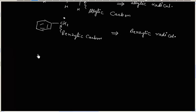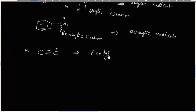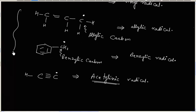We can also have a radical on a carbon coming from acetylene, which we can call acetylenic carbon, and this radical is an acetylenic radical — though this naming may not be standard. So there are different kinds of radicals.